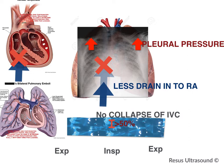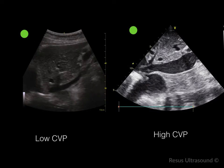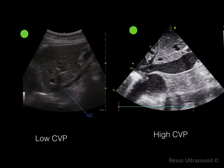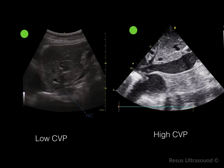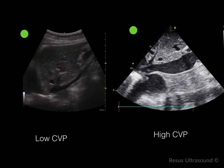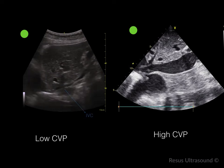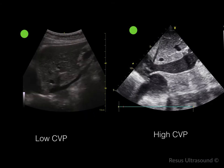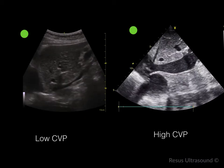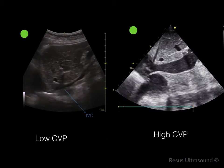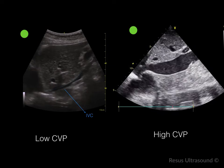Anything that prevents the IVC from draining into the RA — such as tension pneumothorax — would result in a rigid and non-collapsing IVC. Here are two easy 2D examples: the first shows the IVC — the Nike logo shape — is very thin and collapses when breathing in, meaning this patient should be volume responsive when presenting with shock or dyspnea. In the other patient on the right of the screen, the IVC is very large and doesn't collapse at all with inspiration or expiration.